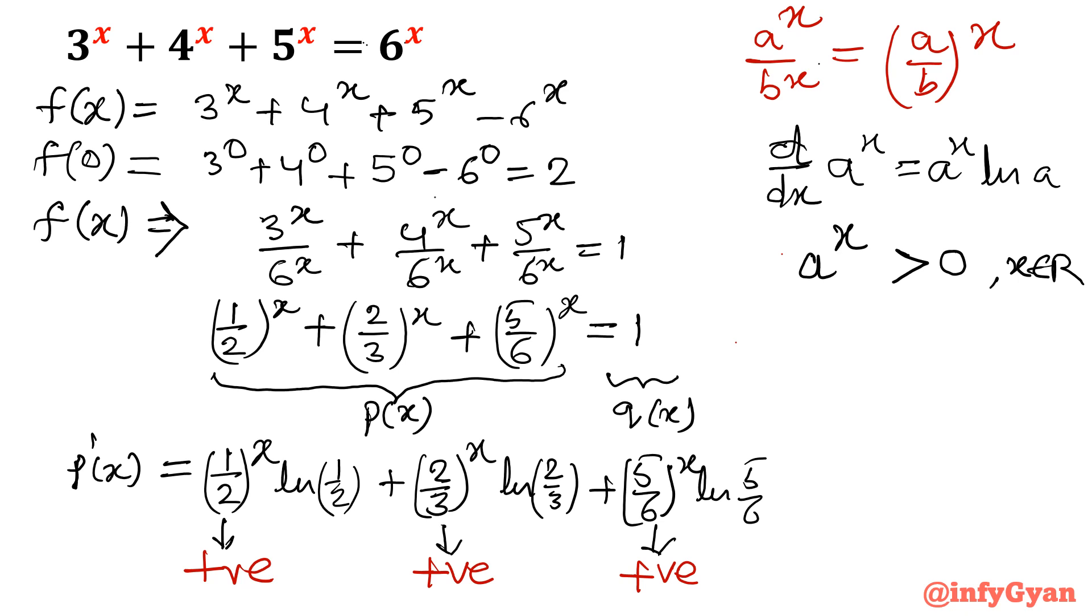Now come to the logarithm values. ln(x) will be always negative when x lies between 0 and 1. If you remember the graph of ln function, between 0 and 1 your graph is negative. So this will be negative, negative, negative.